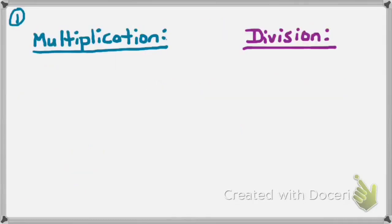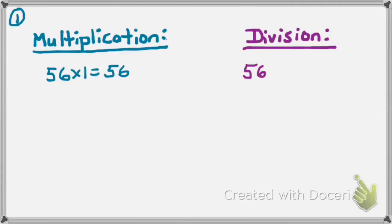In example number 1, we're going to compare some multiplication problems to some division problems. If I have the multiplication problem 56 times 1, well, anything times 1 equals itself, so the answer would be 56. If I have the division problem 56 divided by 1, well, anything divided by 1 equals itself, so 56 divided by 1 also equals 56.